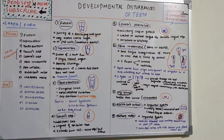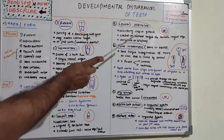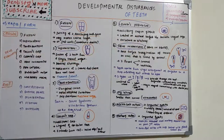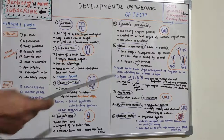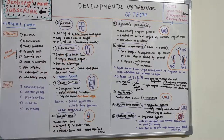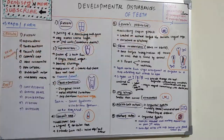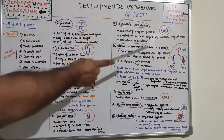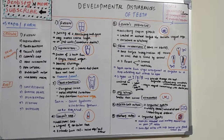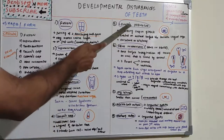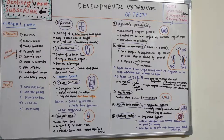Leung's premolar is an accessory cusp or globule located on the occlusal surface between the buccal and lingual cusps of premolars. It is most commonly seen in premolars, which is why it has this name. It can be seen unilaterally or in bilateral conditions. Both talon's cusp and Leung's premolar are classified under dens evaginatus.